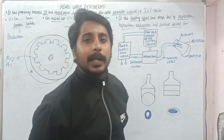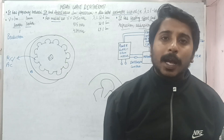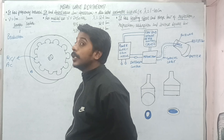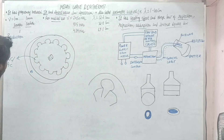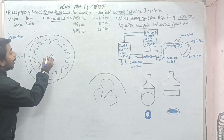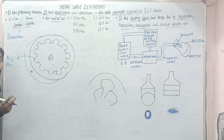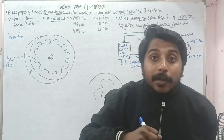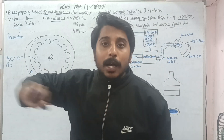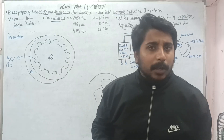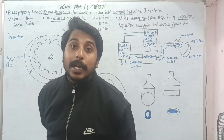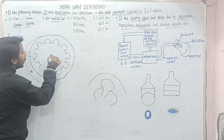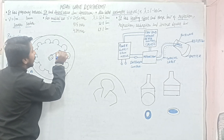The magnetron is like a diode valve. Whenever current is given, the cathode has the property that it will heat up. As soon as it heats up, it will start giving electrons — that is, it will emit electrons. This process is called thermionic emission.